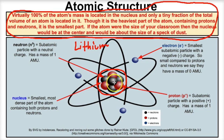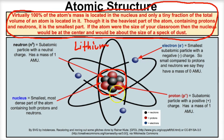Even though it's super small and super dense, it contains virtually 100% of the atom's mass. If we take a look outside of the nucleus, we're going to have this area called the electron cloud, and in this electron cloud we're going to have these things called electrons.